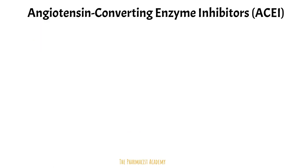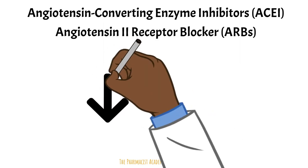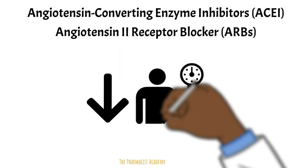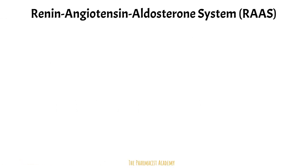Angiotensin converting enzyme inhibitors and angiotensin 2 receptor blockers are mainly used to reduce blood pressure. They have specific indications, but for now let's just focus on the fact that they reduce blood pressure. To appreciate how they reduce blood pressure, we need to understand the mechanism of the RAS system, also known as the renin-angiotensin aldosterone system.